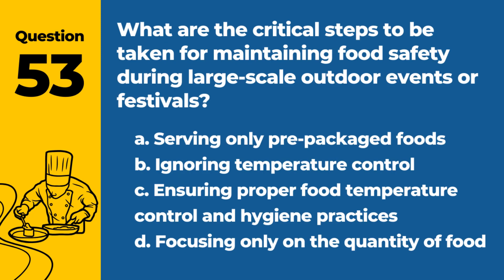Question 53. What are the critical steps to be taken for maintaining food safety during large-scale outdoor events or festivals? A. Serving only pre-packaged foods. B. Ignoring temperature control. C. Ensuring proper food temperature control and hygiene practices. D. Focusing only on the quantity of food. Answer: C. Ensuring proper food temperature control and hygiene practices. During large-scale outdoor events or festivals, it is critical to ensure proper food temperature control and maintain hygiene practices to ensure food safety.